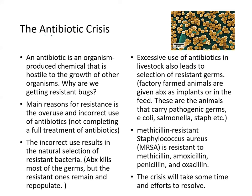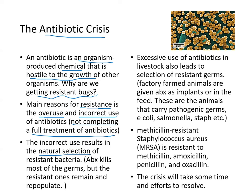Europeans eventually developed resistance to the Black Death but carried the disease to the New World, whose population had no resistance. We are currently in what we call an antibiotics crisis. An antibiotic is an organism-produced chemical hostile to the growth of other organisms. The main reason for resistance is overuse and incorrect use — not completing the full treatment — which results in natural selection of resistant bacteria.